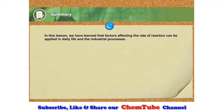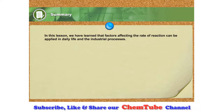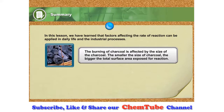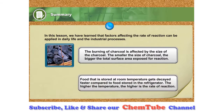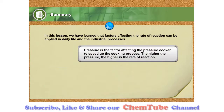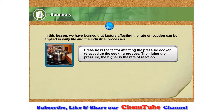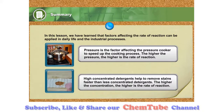In this lesson, we have learned that factors affecting the rate of reaction can be applied in daily life and industrial processes. For example, the burning of charcoal is affected by the size of charcoal — the smaller the size, the bigger the total surface area exposed for reaction. Food stored at room temperature decays faster compared to food stored in the refrigerator, because the higher the temperature, the higher the rate of reaction. Pressure is the factor that allows a pressure cooker to speed up the cooking process. Higher concentrated detergents help to remove stains faster — the higher the concentration, the higher the rate of reaction.